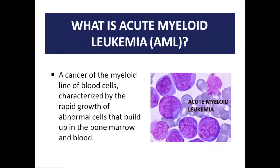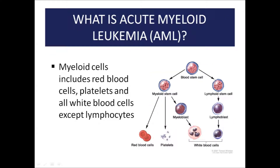In AML, the myeloid stem cells do not mature properly and become abnormal white blood cells called myeloblasts. On the right side is a figure showing the blood stem cell lineage. Acute myeloid leukemia affects the myeloid stem cells. Myeloid cells include the red blood cells, platelets, and all the white blood cells except lymphocytes.